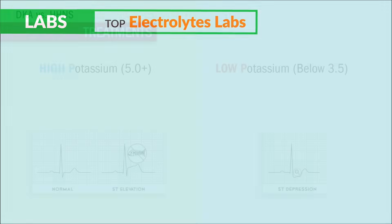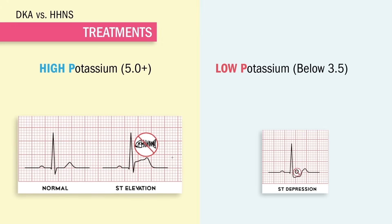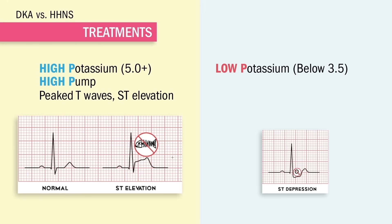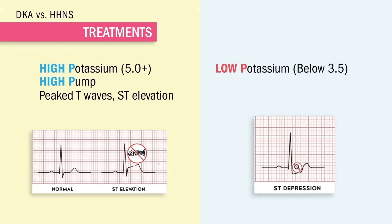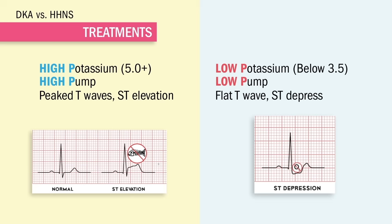With high potassium we have high pumps, so we get peak T waves and ST elevations for potassium over 5.0. The exact opposite occurs with low potassium below 3.5 — think low pumps — so we get flat T waves, ST depression, and even a U wave.